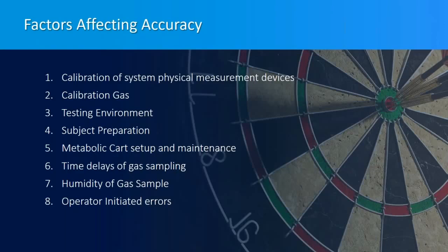Metabolic carts also have many other factors that affect accuracy, including calibration of the system physical measurement devices, the calibration gas, the testing environment, subject preparation, metabolic cart setup and maintenance, time delays of gas sampling, operator-initiated errors, and humidity of the gas sample.